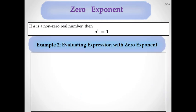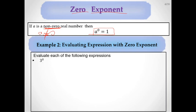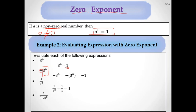Now, the zero exponent. What happens if the power is 0? The zero power of any non-zero real number equals 1. So A to the 0 is always 1, as long as A is not 0. For example: 3 to the 0 power is 1. Negative 3 to the 0 power — you apply the zero exponent first, getting 1, then apply the negative sign, giving negative 1. And 1 over 3 to the 0 equals 1, and 1 over negative 3 to the 0 equals 1.